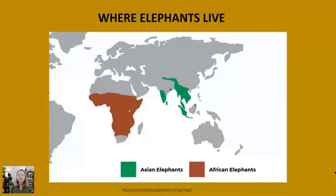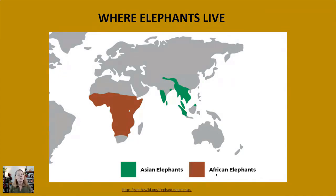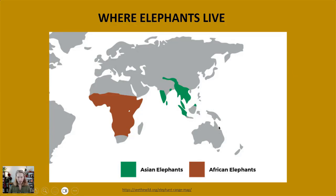So where do elephants live in the world? The ones we're focusing on today are the African elephants, and there are two species: a savanna species that is the most well-known, and that's the one we're drawing today, and there's also one that lives in forests. We're talking about sub-Saharan Africa, and then Asian elephants are over in Asia — I've spoken about those in past workshops.